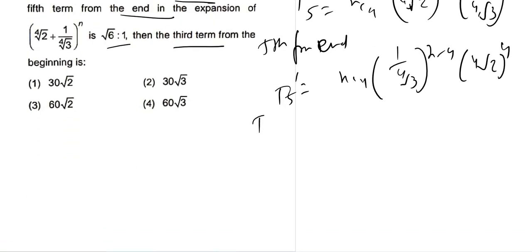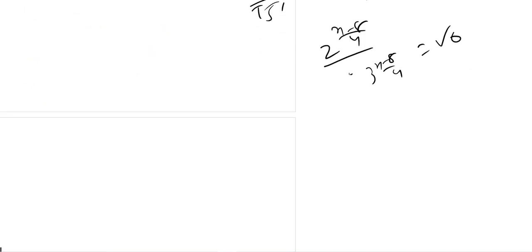So T5 by T5 prime equals √6. Just put all these values divided by 3 to the power (n-8)/4, that equals √6. To solve it, we get √6^(n-8)/2 = √6.